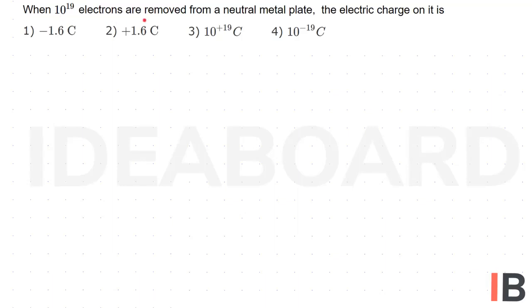When 10 power 19 electrons are removed from a neutral metal plate, the electric charge on it is? We know the charge is conserved, which is equal to the integral multiple of charge of the electron. Q is equal to Ne.